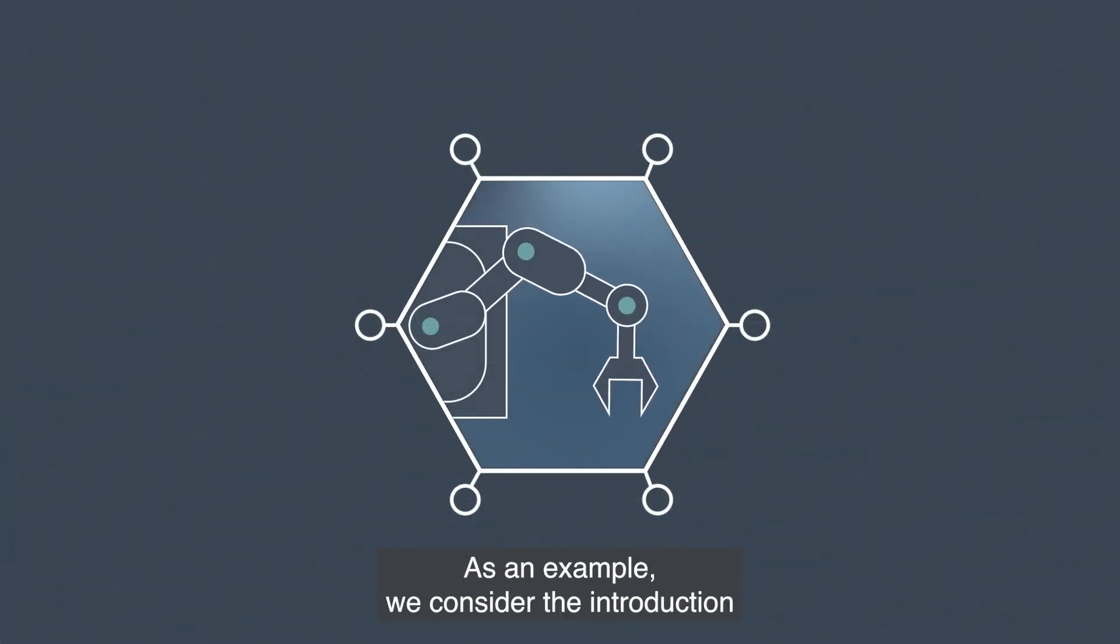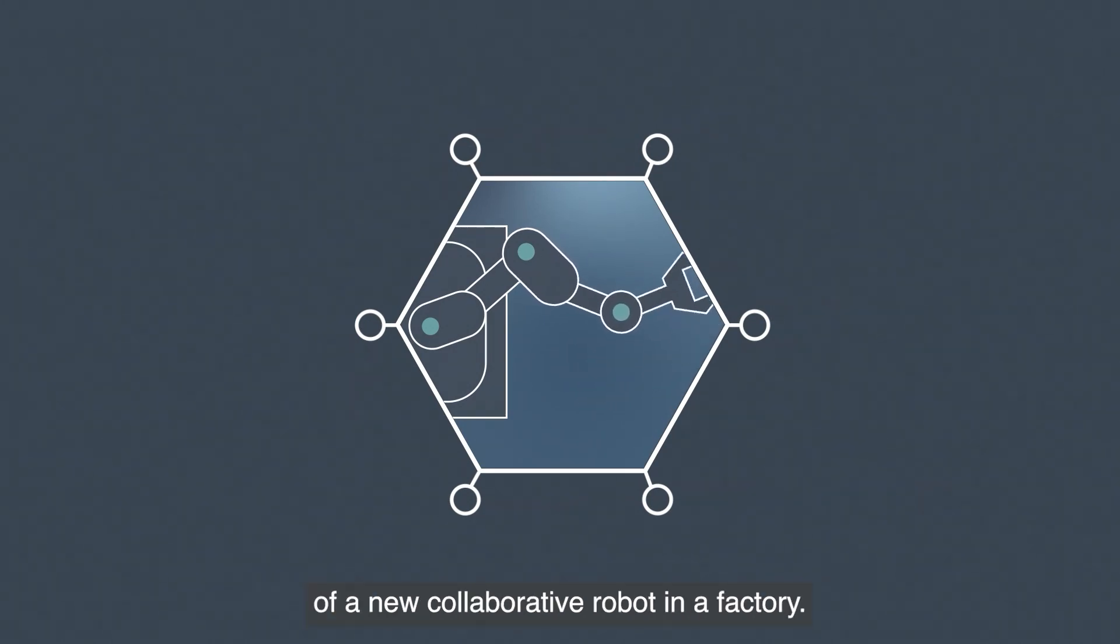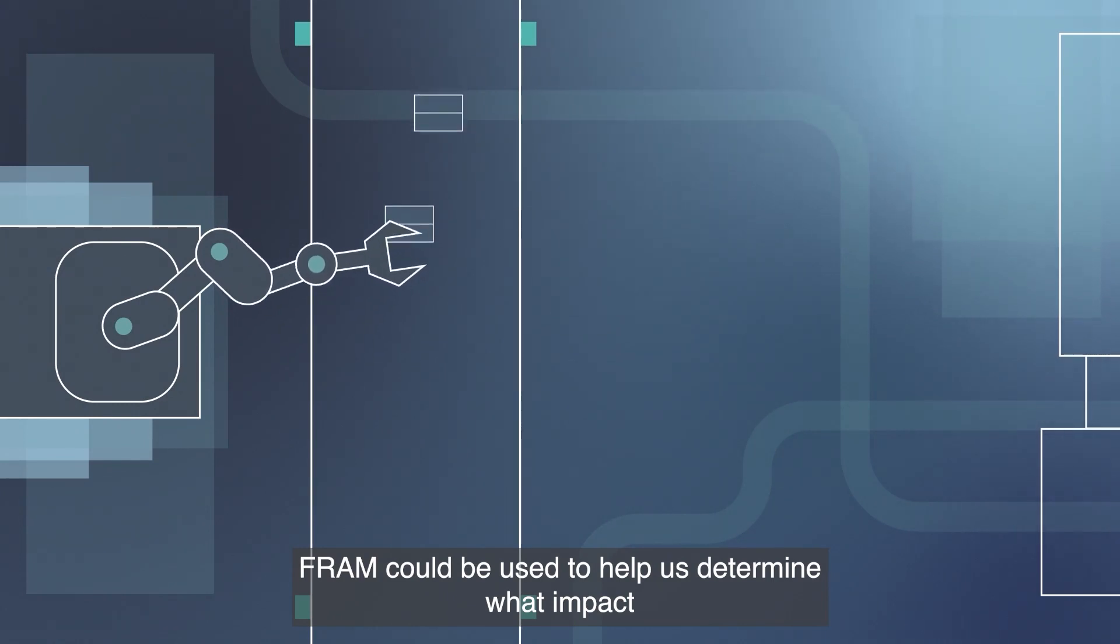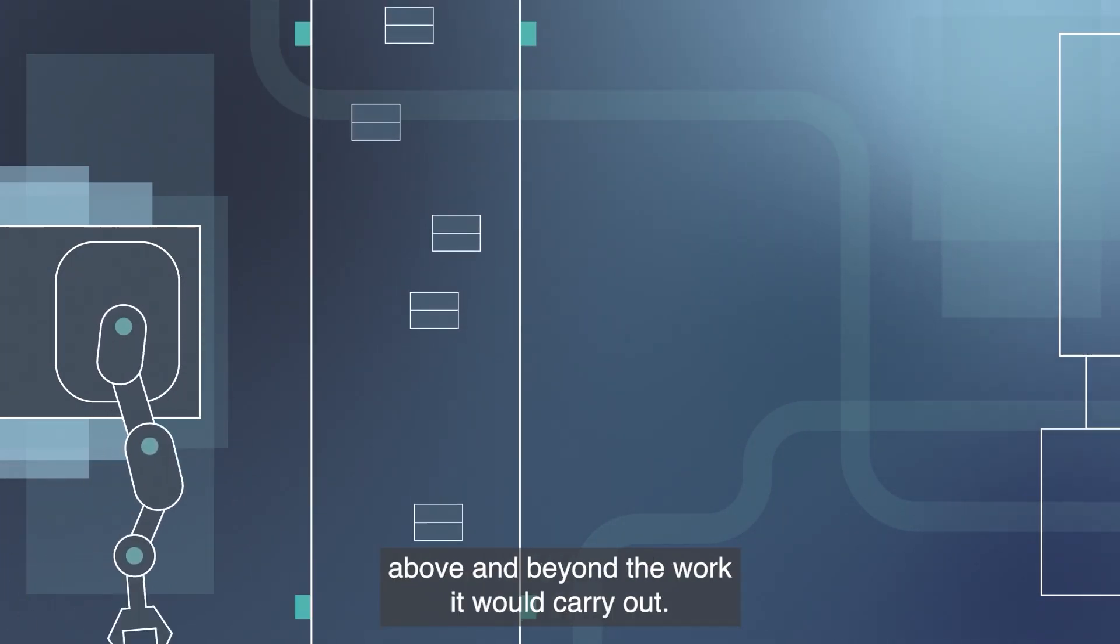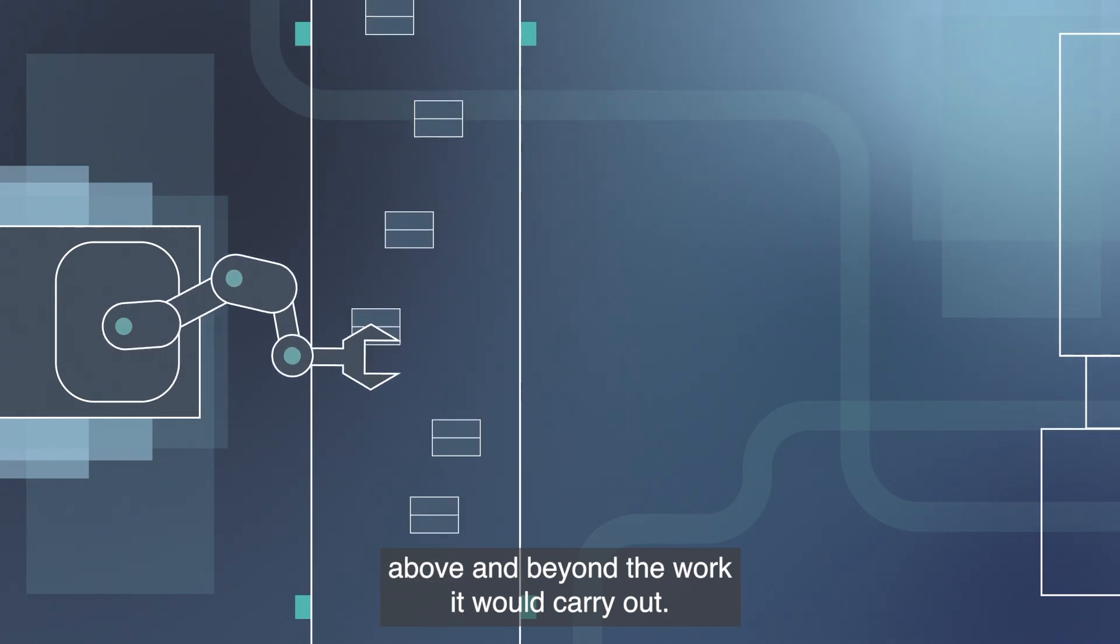As an example, we consider the introduction of a new collaborative robot in a factory. FRAM could be used to help us determine what impact the system could have on the factory as a whole, above and beyond the work it would carry out.